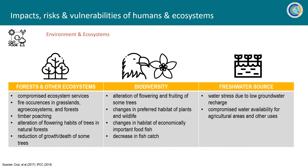We also see compromised freshwater sources, thus adding further strains on water availability for different uses like domestic or power. And for biodiversity, there is alteration of flowering and fruiting of some trees, changes in habitat especially for food fish and agricultural fish, and a decrease in fish catch.